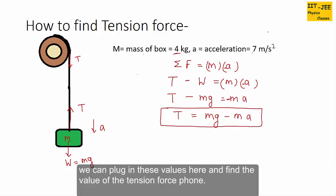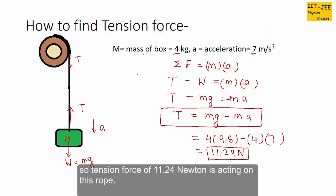We can plug in these values and find the value of the tension force. Gravity is 9.8 and mass is 4 kg, acceleration is 7 m/s². This gives us T equals 4 times 9.8 minus 4 times 7, which equals 11.24 N. So tension force of 11.24 N is acting on this rope.